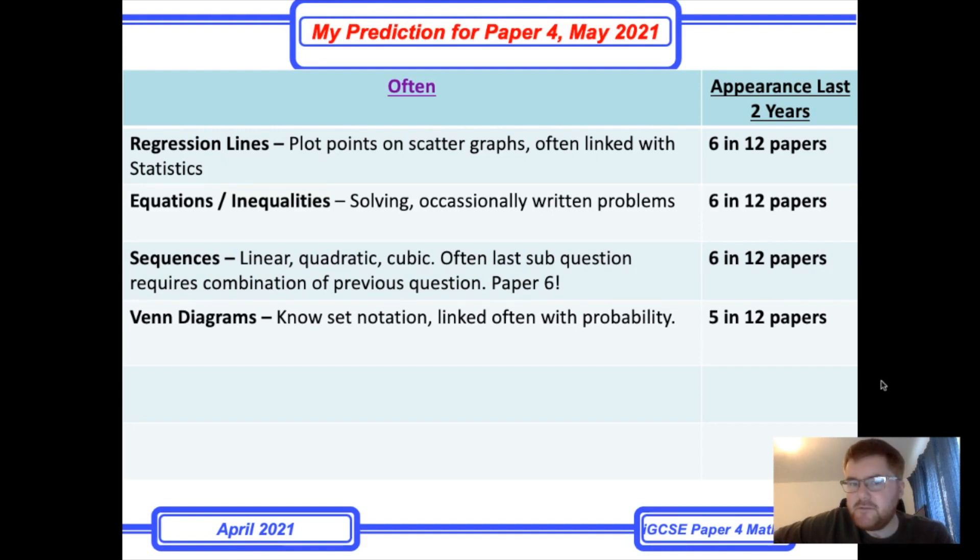And lastly, Venn diagrams - know your set notation, often linked with probability too. Make sure you know intersection, union, prime notation, for example. Again, reasonably sure to appear on either paper two or paper four. It's one of those topics that goes between the papers, alongside equations and inequalities.